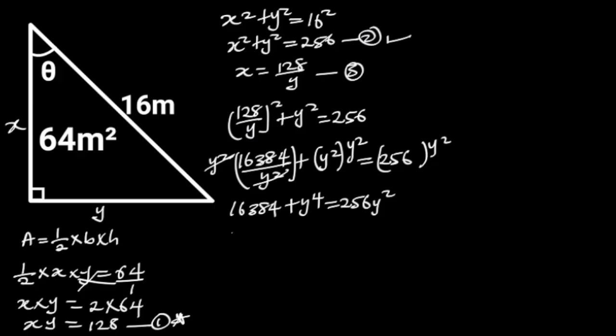And this can be written as y power 4 minus 256 y squared plus 16384 is equal to 0.